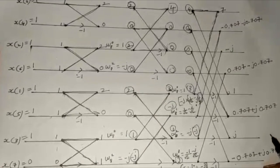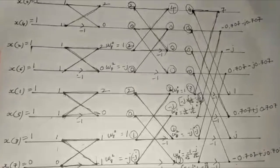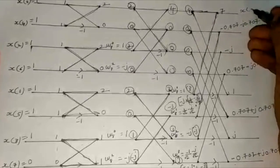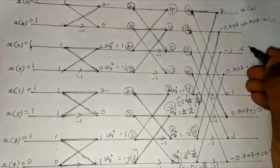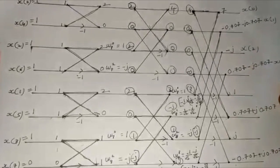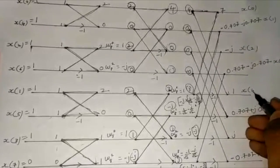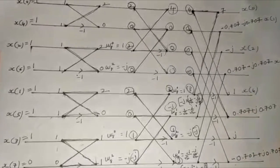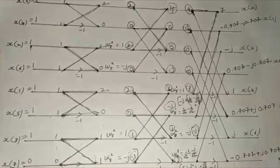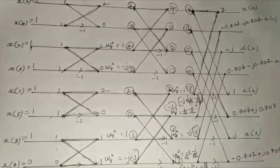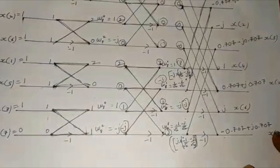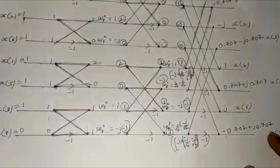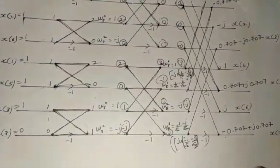Now we have got the final values in the order of X(0), X(1), X(2), X(3), X(4), X(5), X(6), and X(7). The final DFT is denoted by X(k).